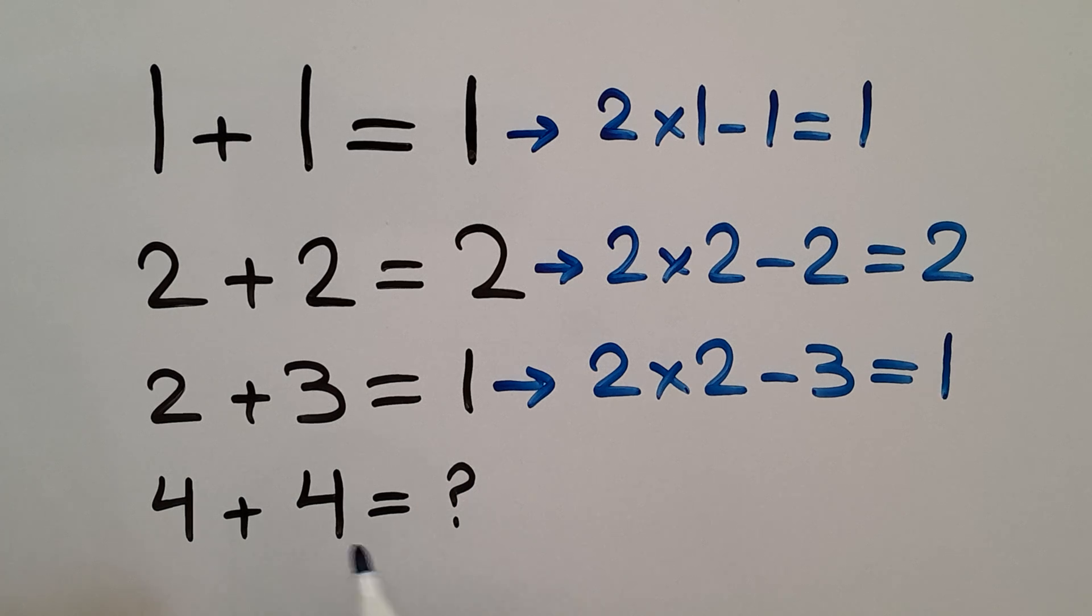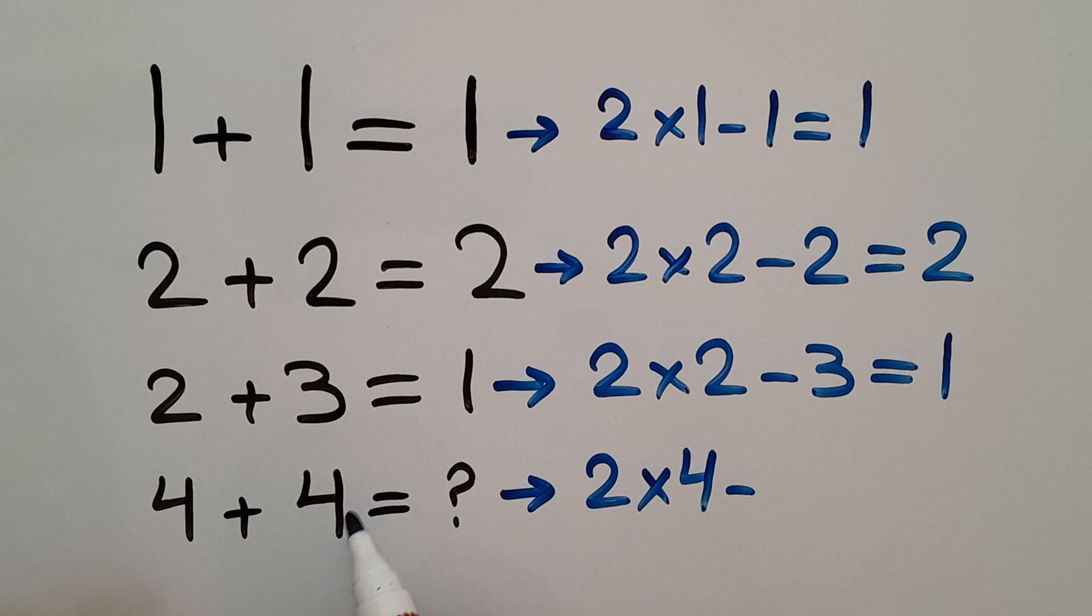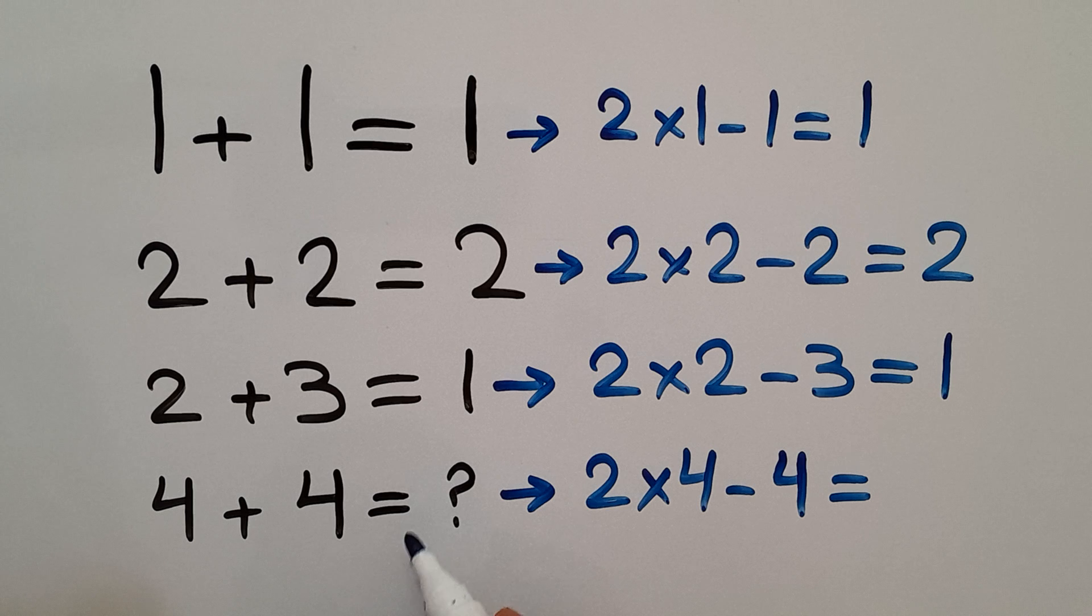Okay, in the fourth line we have 4, 4, and question mark. 2 times the first number, which is 4, minus the second number, which is 4, gives us the right-hand side number, which is question mark.